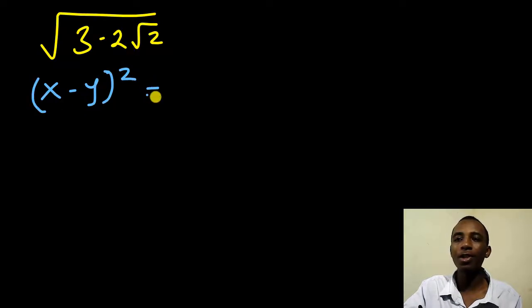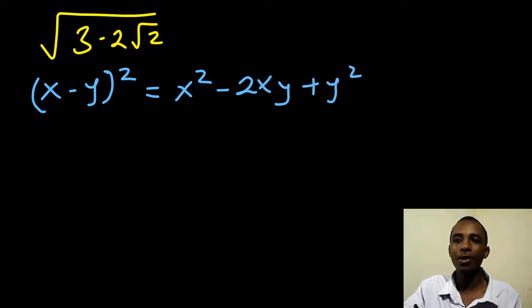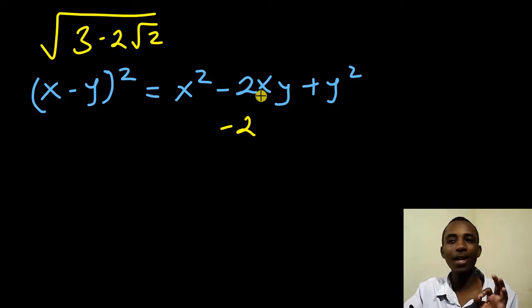So x minus y squared expands to x squared minus 2xy plus y squared. Just to show you this comparison, we already have negative 2 here, and then we also have an extra square root of 2. Now that square root of 2 is either x or it is the y. We don't know which, and in fact you don't even need to know because it can either be x or it can be y.